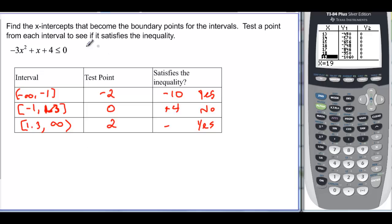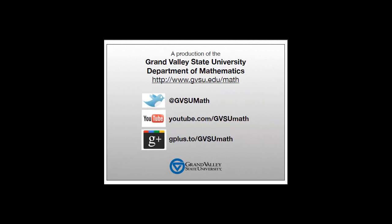How do I write my answer? I need it to be less than or equal to 0. So that's from negative infinity up to -1, including -1. Union, because I have another area, that is from 1.3 including it to infinity.